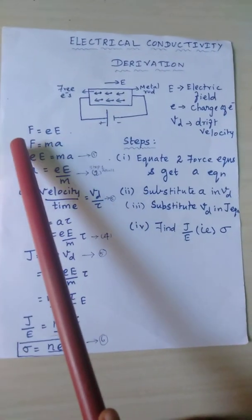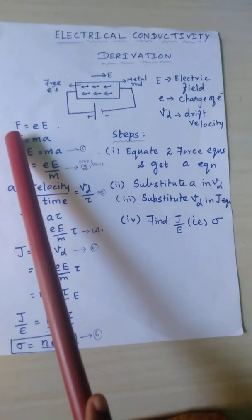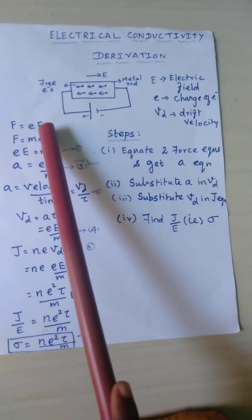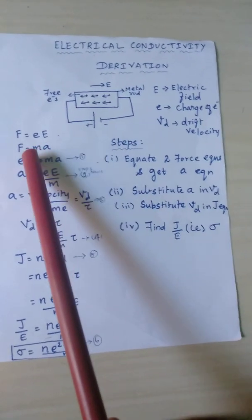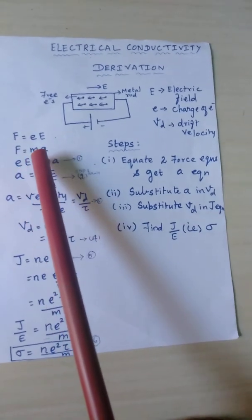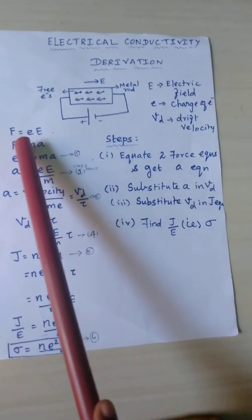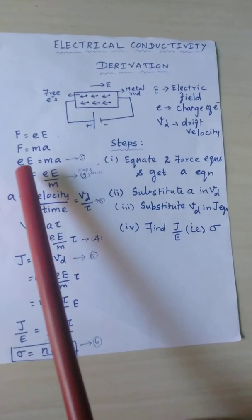First, the force equation. Force F equals charge times field, so F = eE. From Newton's second law, F = ma. We can use Newton's second law to find the acceleration.